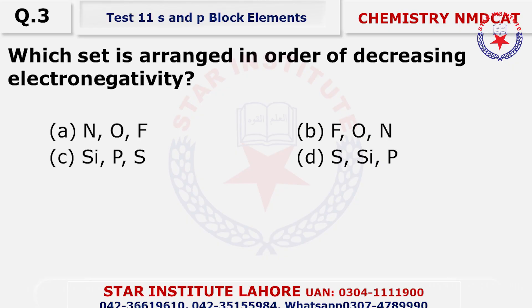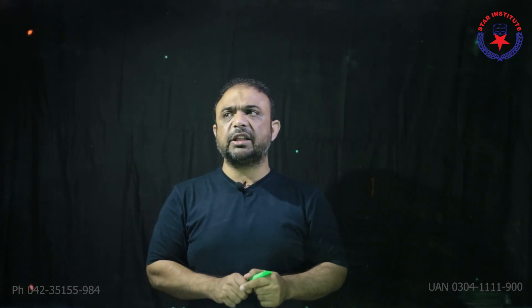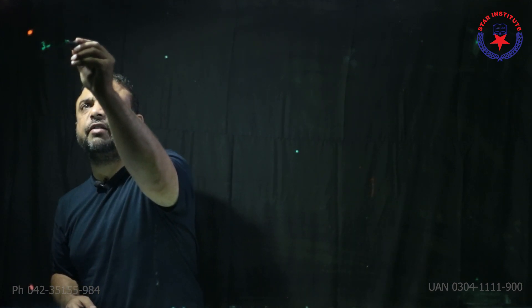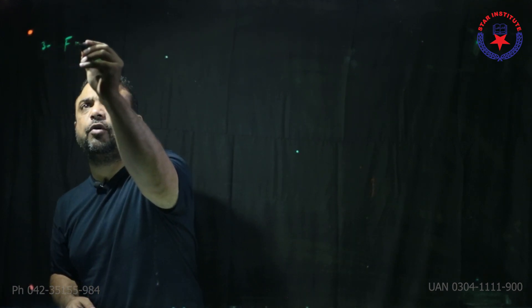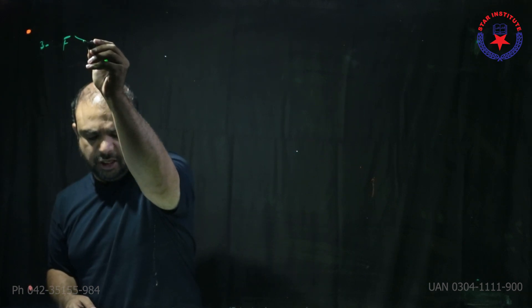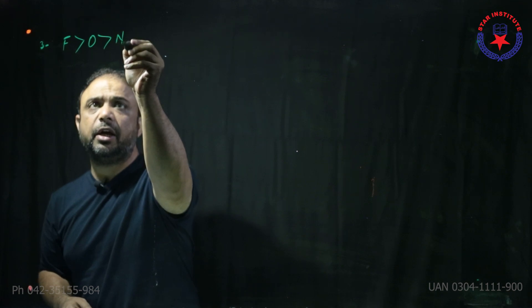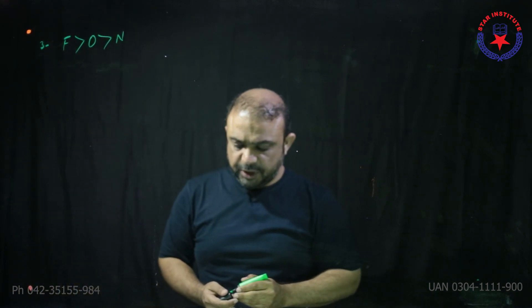Question number 3: Which set is arranged in order of decreasing electronegativity? Electronegativity will decrease. The most electronegative element is fluorine. Fluorine is most electronegative, followed by oxygen, which should be followed by nitrogen. So the choice is B.